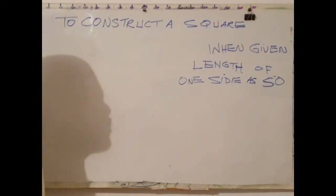Welcome back. After watching this video, you should be able to construct a square when given the length of one side. A square is a quadrilateral which has four equal sides and angles.